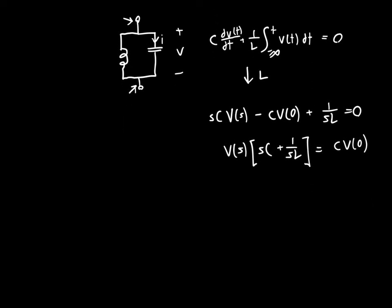Now we can factor it further and solve for V(s). We just get V(s) is equal to C times v(0) divided by sC plus 1 over sL. But this is a little inconvenient—we've got s's in numerators and denominators.